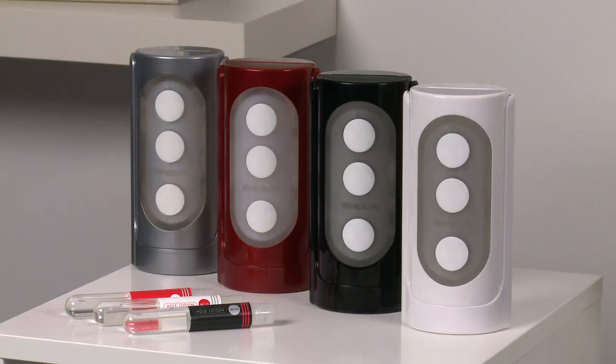There are four different varieties of the Tenga flip hole. We've got white, black, red and silver, and from the outside they all look the same, but inside they each have a different texture for different sensations.